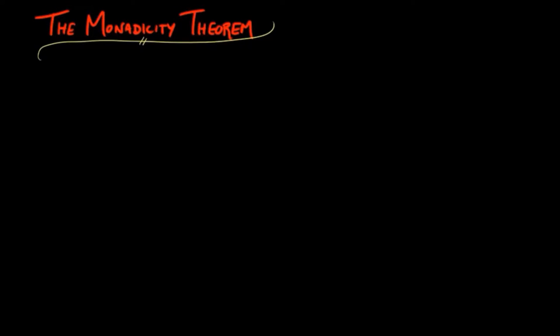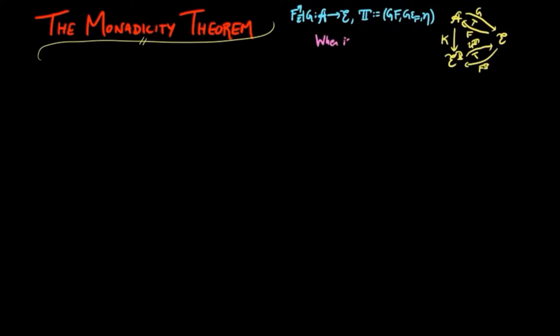One of the major results in category theory is the monadicity theorem. If we have an adjoint situation FG and the induced monad T, we want to know when the comparison functor K is an equivalence. By definition, this is the same as asking the question: when is G monadic?